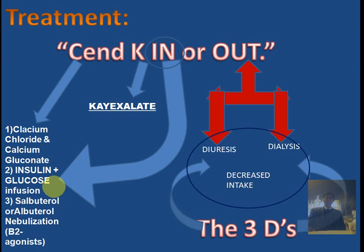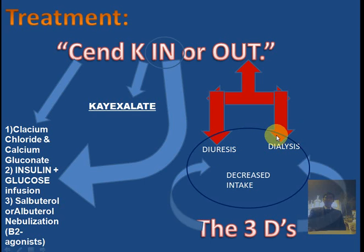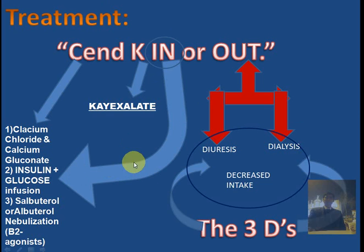A second way to send potassium back inside the cells is by using beta-2 agonists like albuterol or salbutamol. Those are the ways you can send potassium inside the cells from extracellular space. Alternatively, you can throw potassium out of the body using diuresis and dialysis. For diuresis, you can use loop diuretics like furosemide or thiazide diuretics, but you should not use potassium-sparing diuretics. You can use diuretics to excrete potassium, or if kidneys have failed, you can go for dialysis. This is kayexalate — an oral agent.